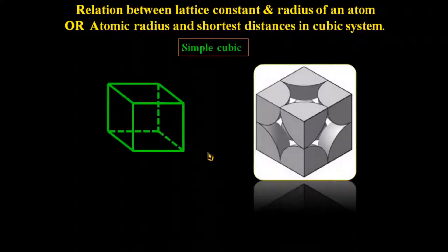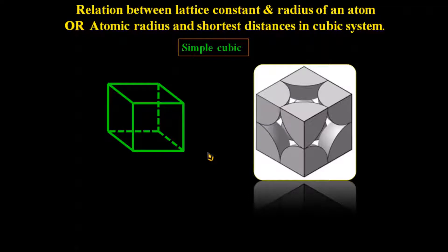Here we discuss the relation between lattice constant and radius for three different cubic cells: the simple cubic unit system, the face-centered cubic unit system, and the body-centered cubic unit system. First we look at the simple cubic unit system.